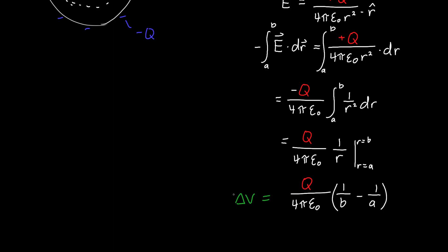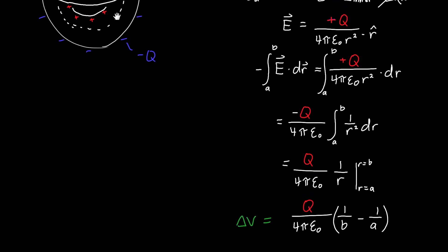Signs don't matter here because we're going to take the absolute value. But if they did, this is the voltage at the negative plate, our final plate, minus the voltage at the positive plate, our initial plate.